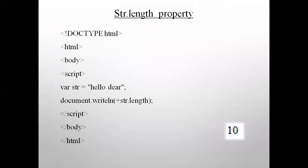For example, if you take the word 'hello' — H-E-L-L-O — how many characters are there? Five. So it will give you five as the answer. The string length is five for the word 'hello'. This is the property explaining the string length.